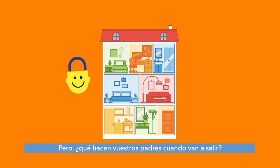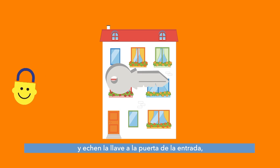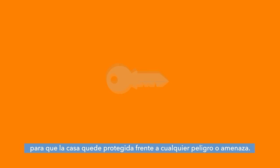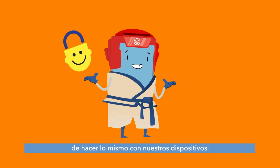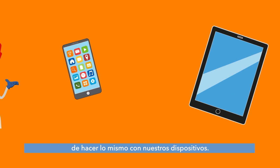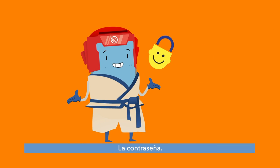But what do your parents do when they're not at home? They'll probably close the windows in the rooms and lock the door of the house with a key so that your home can be protected from dangers and threats. We have to remember to do the same thing with our devices. And what is the key to our smartphone? A password.